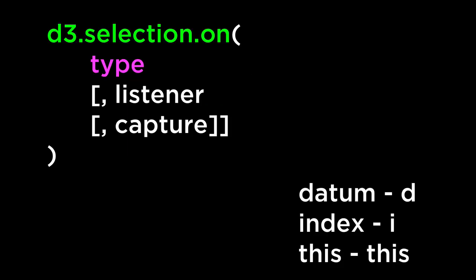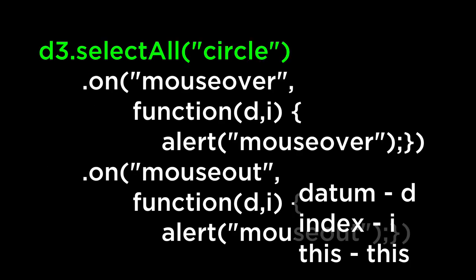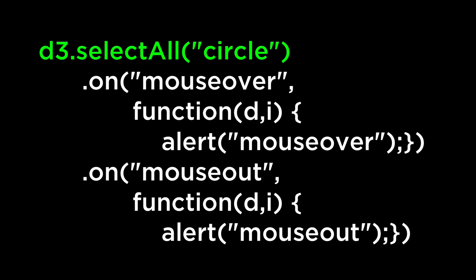d3 invokes the listener in the same way it invokes other operator functions, by passing the current datum d and index i and the this context as the current DOM element. This example creates a selection of all the SVG circle elements. Then using d3 Selection dot on, it adds a mouse over event listener to each SVG circle. When the mouse goes over one of the SVG circle elements, the anonymous function will be invoked and alert us with the string 'mouse over'.